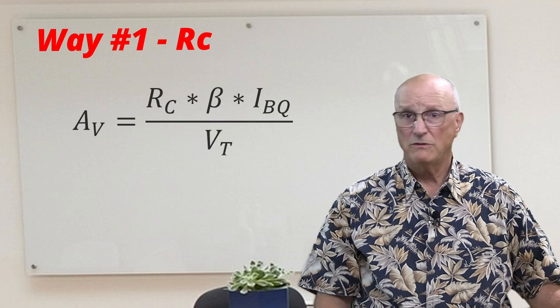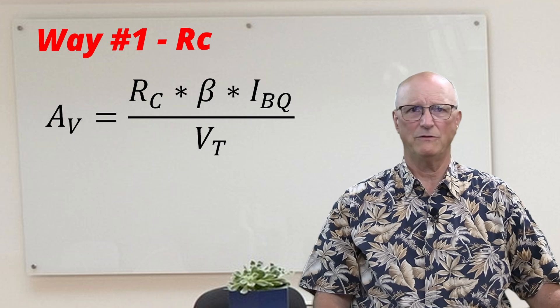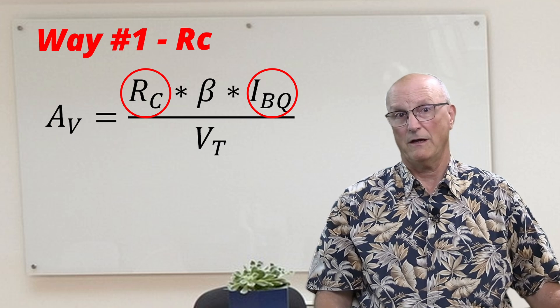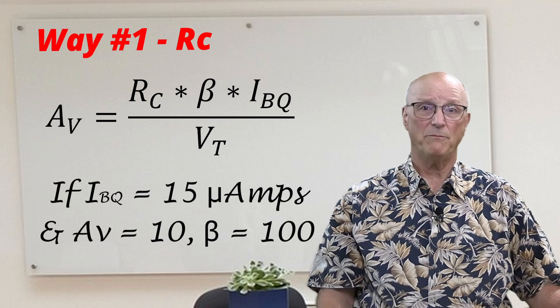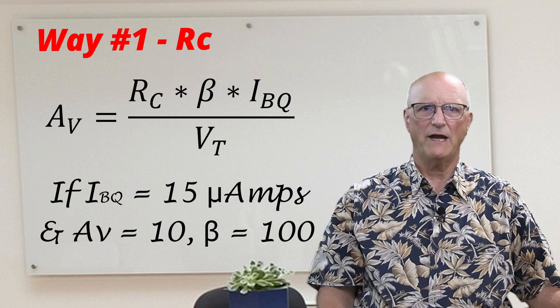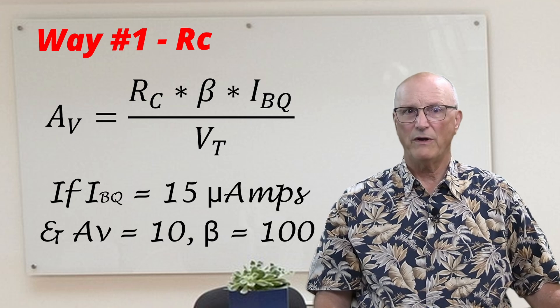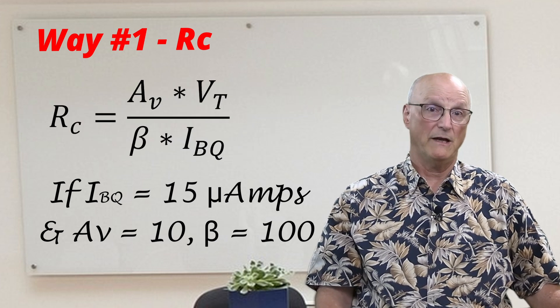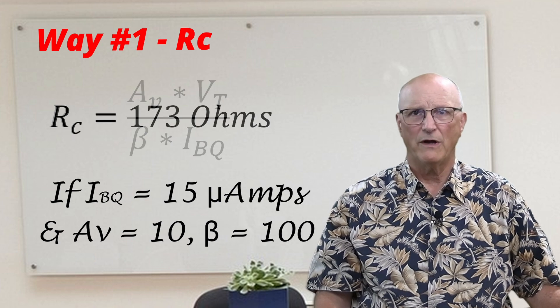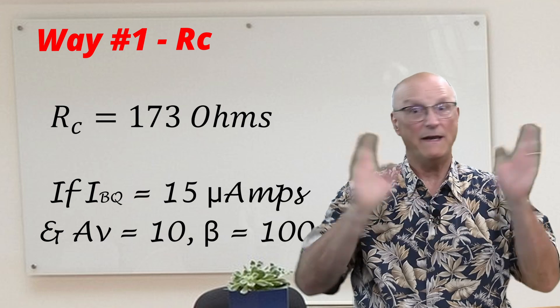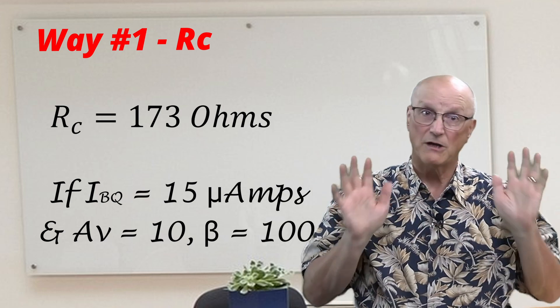The first way to accomplish this is to simply choose a collector resistor value which will give you the voltage gain of 20 dB. We would use the same common base voltage gain formula that we used before. We would be left with two unknowns. We could assume one and calculate the other. If I wanted to maintain a quiescent base current of 15 microamps and have a voltage gain of 10, or in other words 20 dB, assuming the current gain of 100, then we would rearrange the equation. Putting in the known values, our collector resistor would have to be 173 ohms.